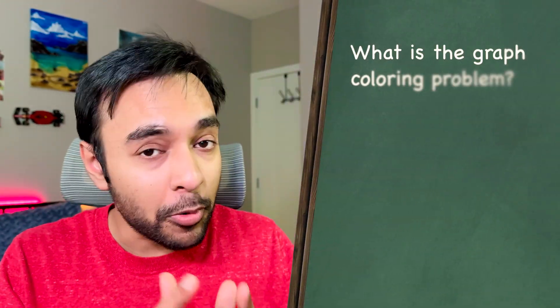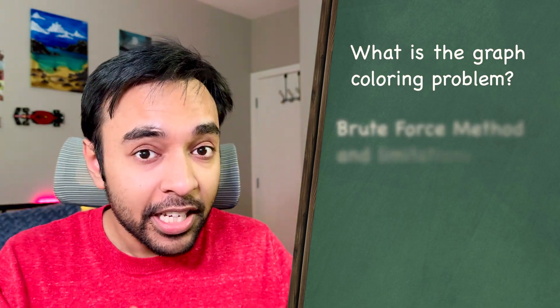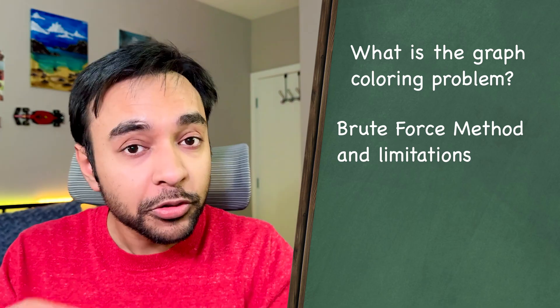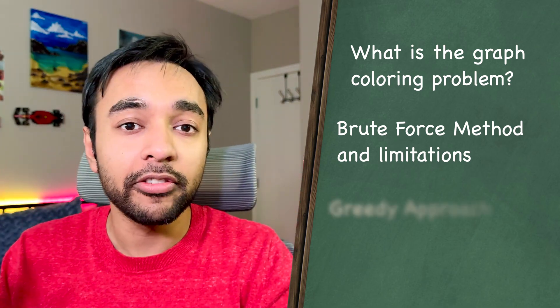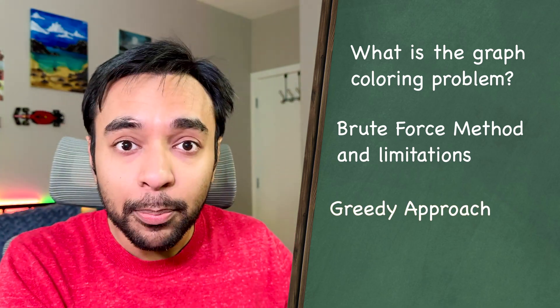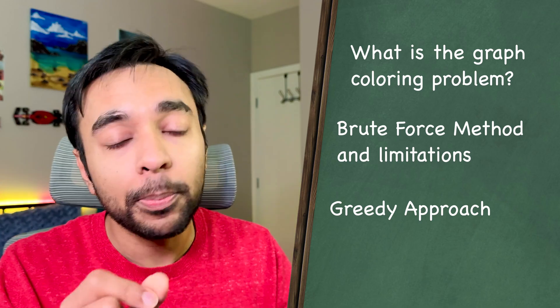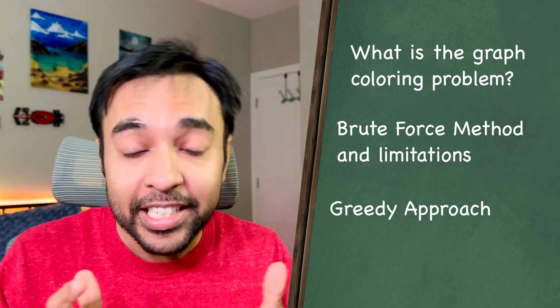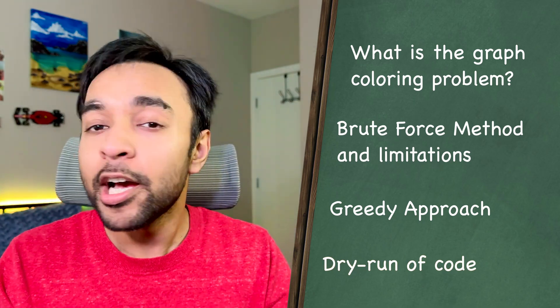Hello friends, welcome back to my channel. First, I will go over the problem statement and tell you what it actually means. Next, we will try to solve this problem using a brute force approach and then see how you can color the graph in different ways. We will cover a greedy approach and then also see why this greedy approach is not optimal all the time. After that, as usual, we will also do a dry run of the code so that you can understand and visualize how all of this is actually working in action. Without further ado, let's get started.